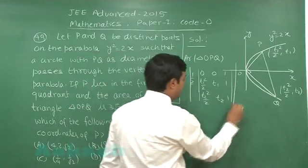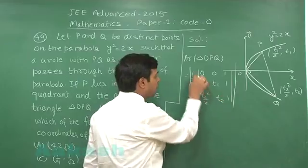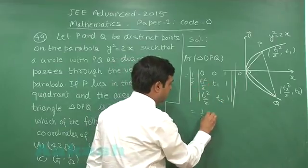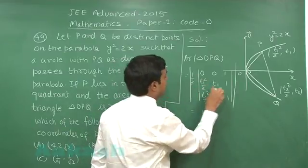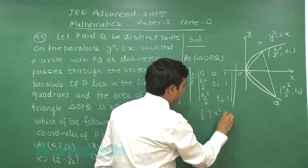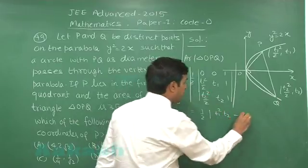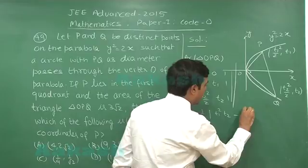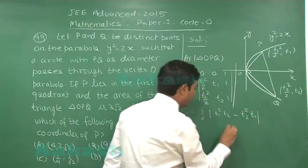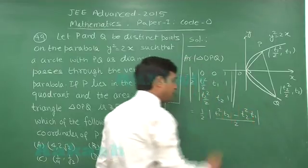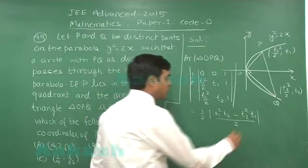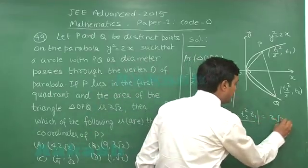This gives me on simplification 1 multiplied with t1 square t2 by 2 minus t2 square t1 by 2. So, entire term can be divided by 2. This area is equal to 3 root 2.